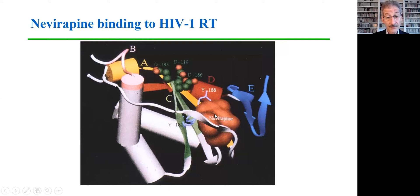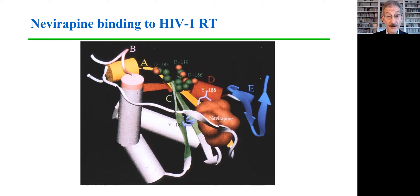Here you see a diagram of nevirapine bound in that pocket, and you can see these two tyrosine residues at positions 181 and 188 have important stacking interactions with nevirapine as they would with other NNRTIs. That's why these drugs are less active against HIV-2, in which case these two tyrosines are usually altered to have a different amino acid.